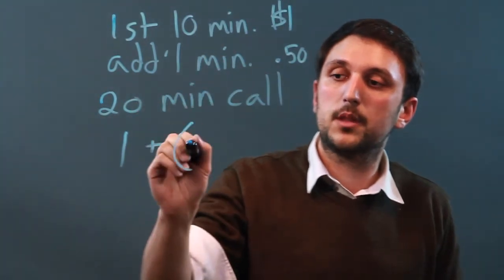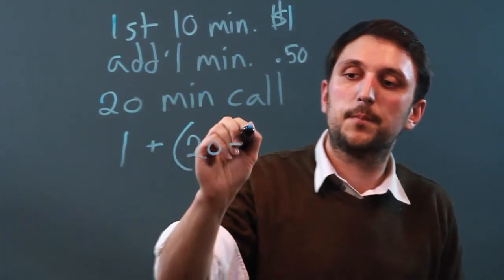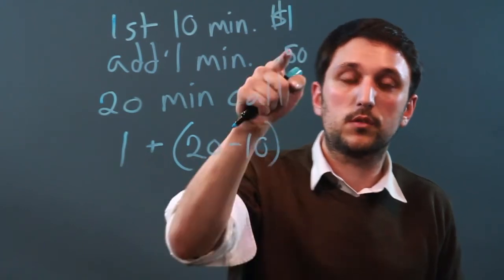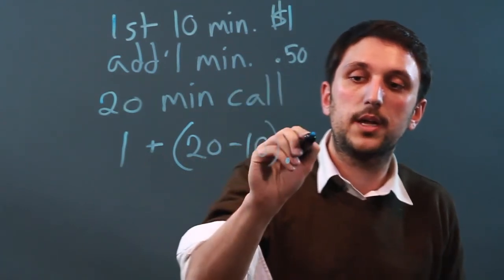Twenty minus ten. But how much is that going to cost us? Point five. So we multiply it by point five.